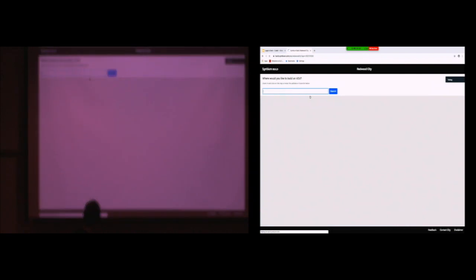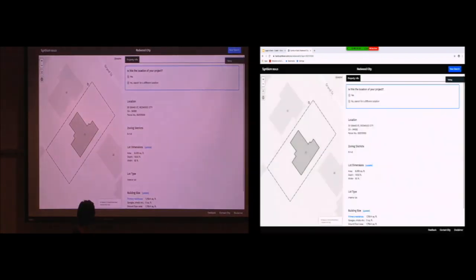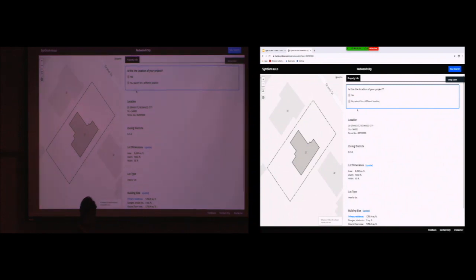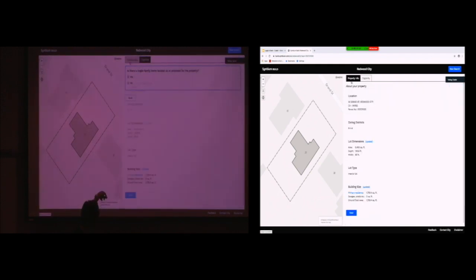And then, more interestingly, this is where the computational law component comes into place—all of the development standards that would then apply. How big can this be? Where exactly can it be located? And all of the things that you would need to know in order to do this and that you would traditionally go to a planning counter, take a number, or talk to an architect to find out. So let's just see it visually. We're going to type in an address here for a property in Redwood City. 20 grand. So we've activated Redwood City. We've basically taken the ADU regulations and the planning code and a number of other laws and regulations related to ADUs, and we've built them right into this.